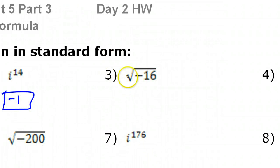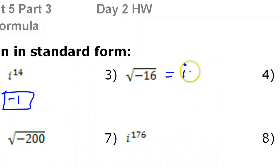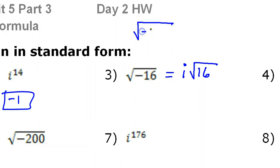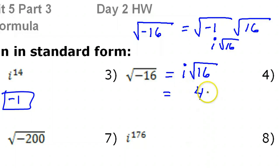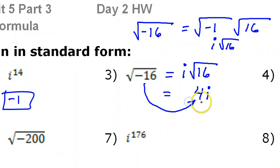Let's take a break from that and look at problem number 3. Remember, if you have a negative under a radical, that is i. I want you to be able to do this in one step, but I'll show it in two steps to be really clear. You could look at the square root of negative 16 as the square root of negative 1 times the square root of 16, which is i times radical 16. The square root of 16 is 4, and that i is still there, so we put it on the right. In the future, I would expect you to go immediately to 4i.